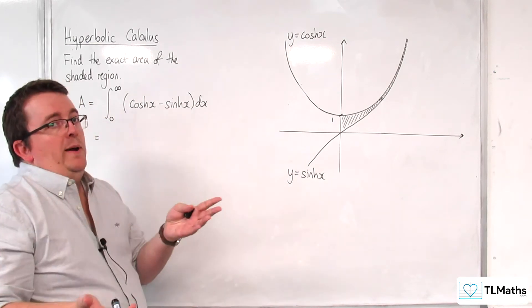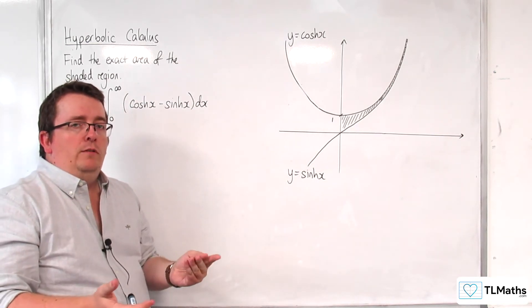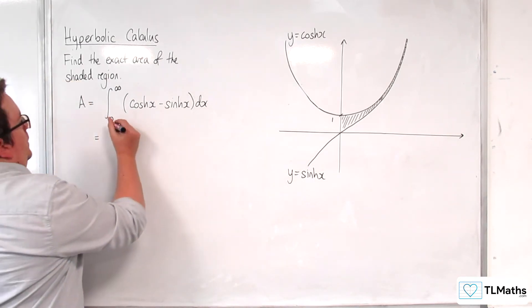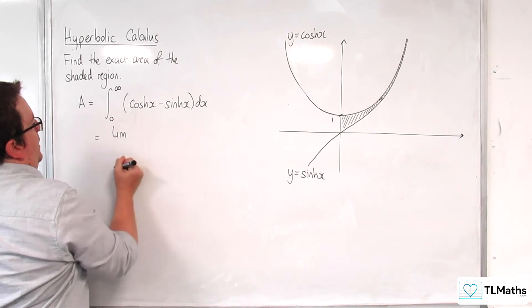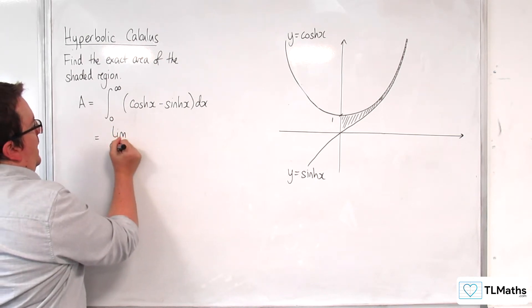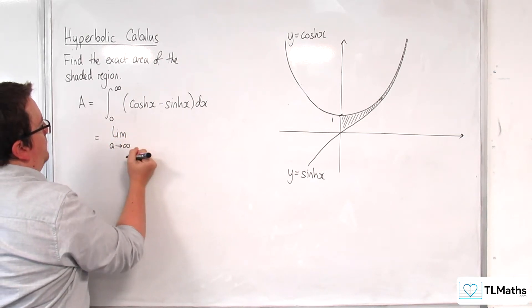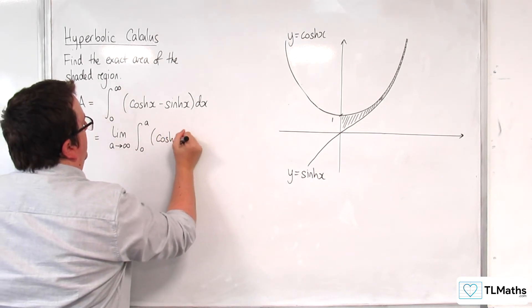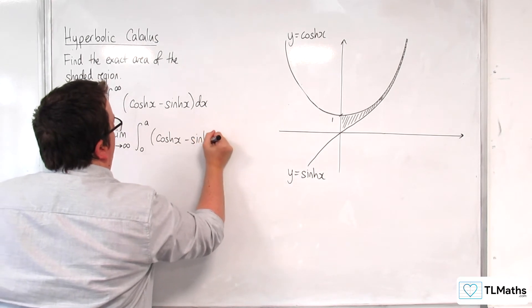In order to access this and to understand what's going on, you will need to have met improper integrals by this point. So what we do is we say we are looking at the limit as a tends to infinity of the integral between 0 and a of cosh x take away sinh x.